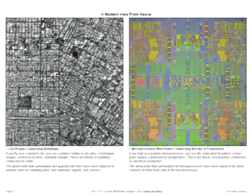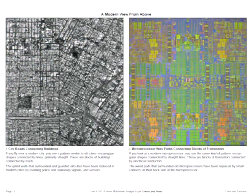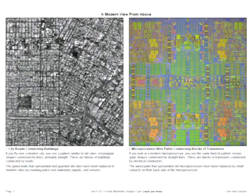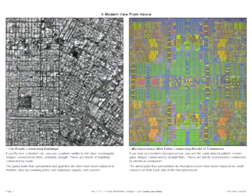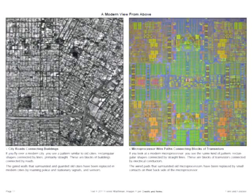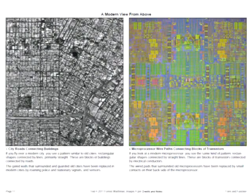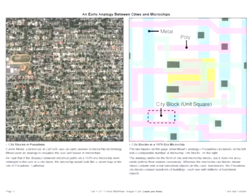If you fly over a modern city, you see the same pattern. The rectangles are blocks of buildings; the lines are the city's road network. If you look at a modern microprocessor, the same pattern exists. The rectangles are blocks of transistors, and the lines are electrical conducting paths.